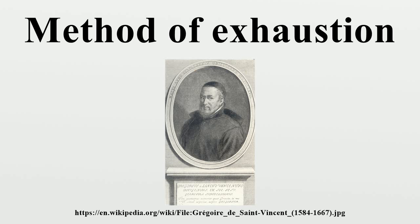The idea originated in the late 5th century BC with Antiphon, although it is not entirely clear how well he understood it. The theory was made rigorous a few decades later by Eudoxus of Cnidus, who used it to calculate areas and volumes. It was later reinvented in China by Liu Hui in the 3rd century AD in order to find the area of a circle. The first use of the term was in 1647 by Grégoire de Saint-Vincent in Opus Geometricum Quadratura Circuli et Sectionum.